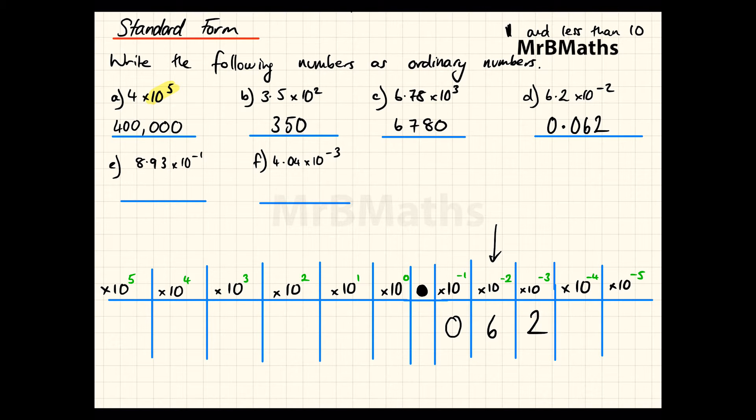Let's try another small number. Now we've got 8.93 times 10 to the minus 1, so I find times 10 to the minus 1: 8, 9, 3. Here's my decimal point, so 8.93 times 10 to the minus 1 as an ordinary number is 0.893.